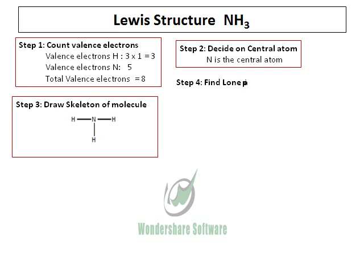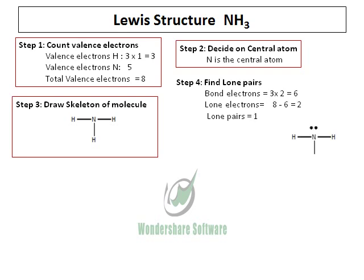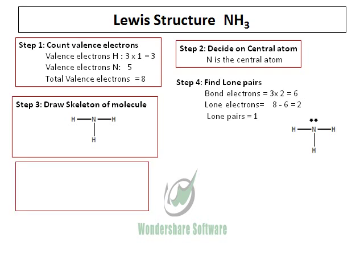Step 4 will be finding the lone pairs. We have bond electrons from 3 bonds — that's 6 electrons. Lone electrons equal valence electrons minus bond electrons: 8 minus 6 is 2. So we have 1 lone pair on ammonia. Remember that lone electrons refers to the number of electrons, while lone pair refers to the pair of electrons.